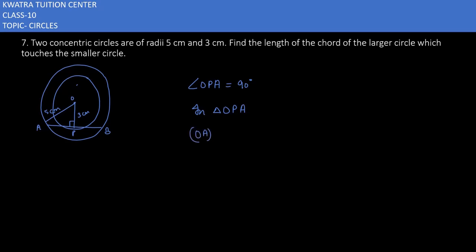So this will be OA² = OP² + AP². OA square is 5. OP is 3. Then AP is unknown. 5² is 25, 3² is 9. So you will get AP² as 16. And we know that 16 can be written as 4². So it will be square and square get cancelled. You will get 4 as AP.